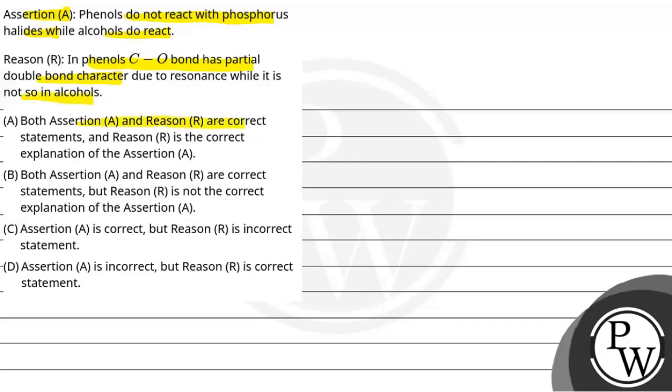Option A: Both assertion and reason are correct statements, and reason is the correct explanation of the assertion. Option B: Both assertion and reason are correct statements, but reason is not the correct explanation of the assertion. Option C: Assertion is correct, but reason is incorrect. Option D: Assertion is incorrect, but reason is the correct statement.